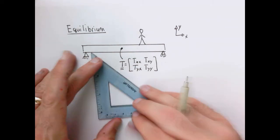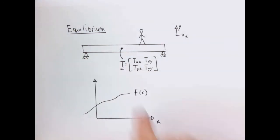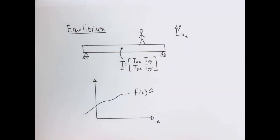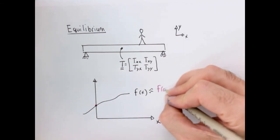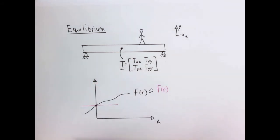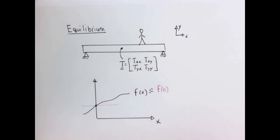Before we do that, let's work through something that has to be true for every function. Here I've graphed an arbitrary function f of x — a simple one-dimensional function — and we want to remind ourselves how we can approximate it. If I want to approximate around the point x equals zero, the simplest approximation is just equal to the value there. This is like assuming the weather tomorrow is the same as today — it's an okay approximation for a little while, but it doesn't stay good for very long.